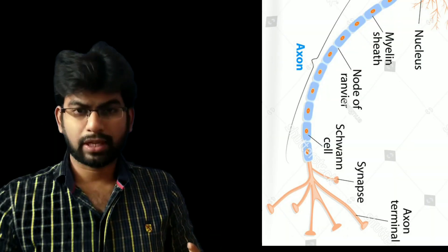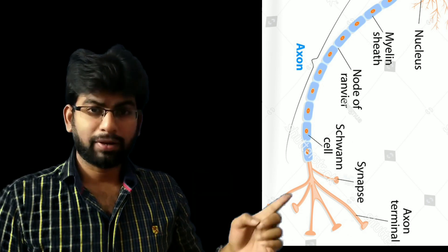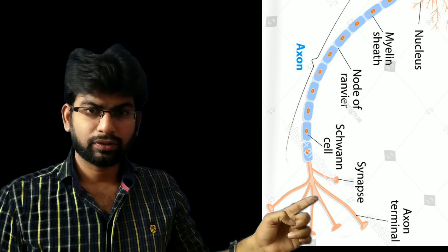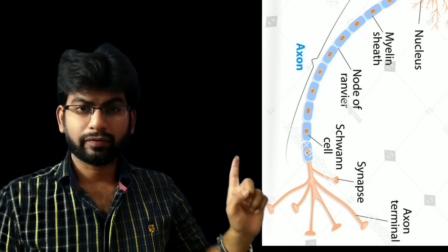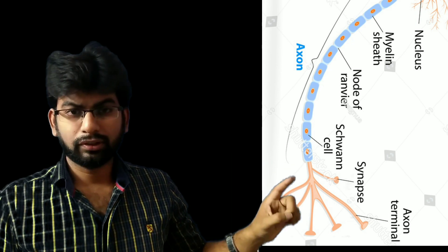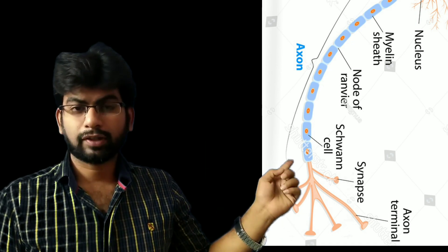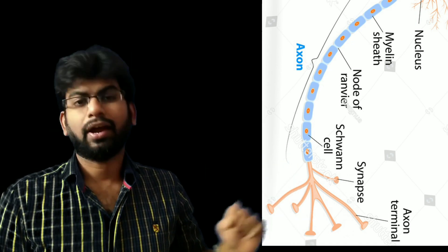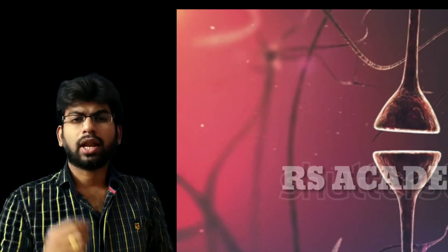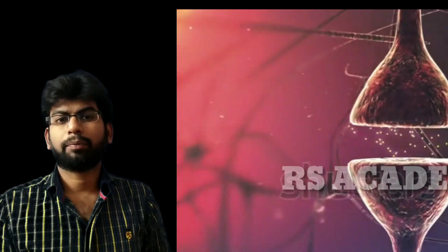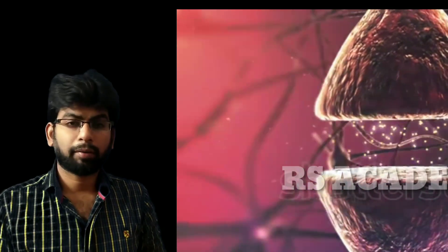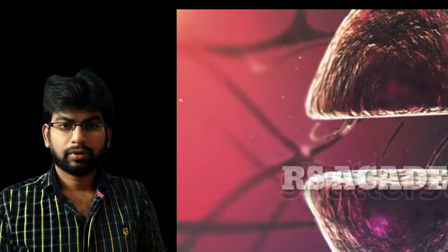Then dendrites, then the long projection which is the axon, and at the ending we have the axon terminals. The axon terminals attach to the dendrites of the next cell. There is a very small minute gap between the axon terminal and the dendrites.